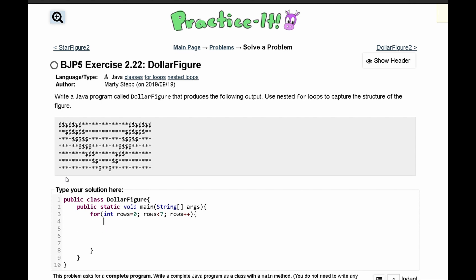In here we can print out our stars. So we can say for int stars and it's equal to zero, and it's growing by two every single row.